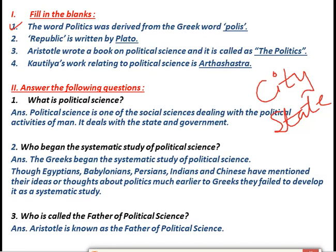The second question: Republic is written by — Republic is written by the great philosopher Plato, P-L-A-T-O. The third question: Aristotle, who was also one of the students of Plato, wrote a book on political science called 'The Politics'. Just remember that Aristotle wrote a book and the name of the book was The Politics.